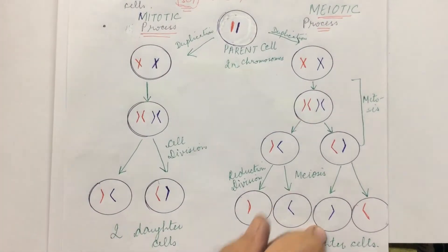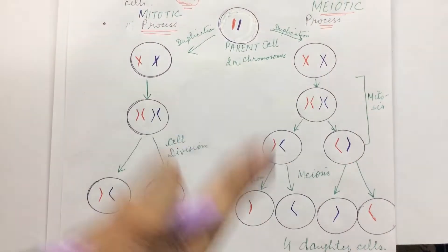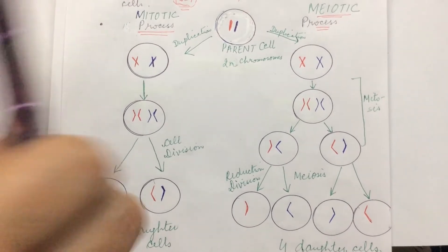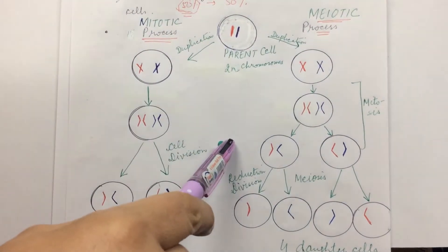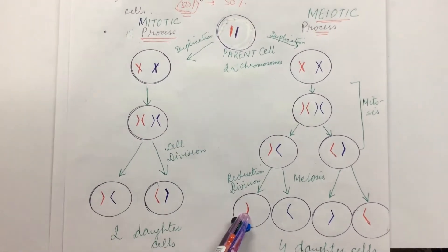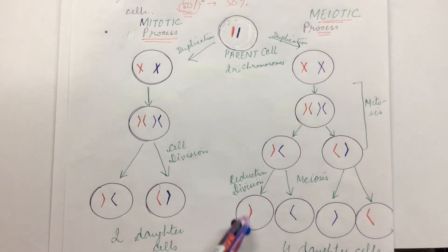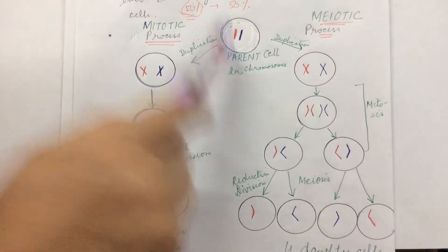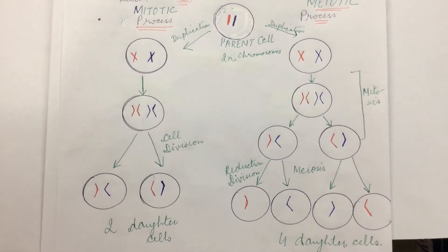Why do some cells follow mitotic division and others meiotic division? It's very important to maintain the chromosome number at the end of the reproduction process. Meiotic division must take place in sex cells. As we learned in the reproduction chapter, during zygote formation the sperm comes from the father and the ovum from the mother — each carrying half the number of chromosomes. When sperm and ovum fuse, the zygote has the diploid number again, then undergoes multiple divisions to form the embryo, fetus, and finally the newborn child.